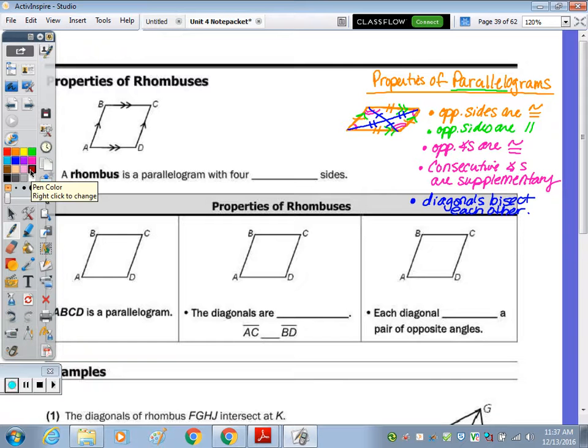So today I'm looking at rhombuses. A rhombus is a parallelogram, so we have all the properties of a parallelogram to the right. So a rhombus is going to have all of those properties. What's different is that it has four congruent sides.